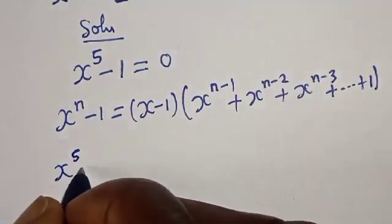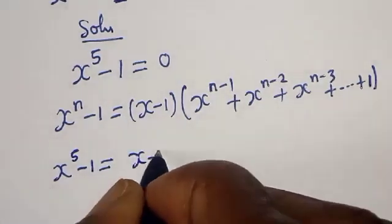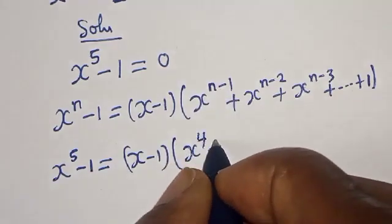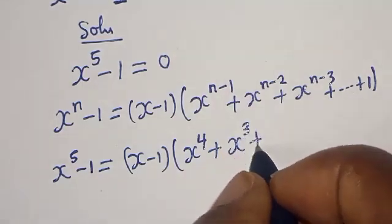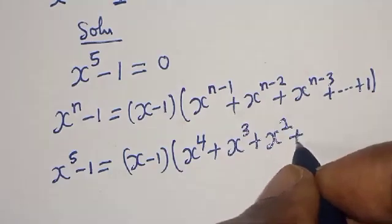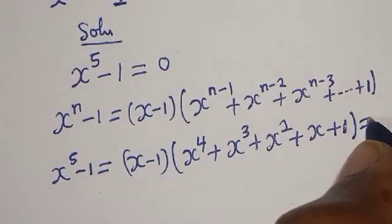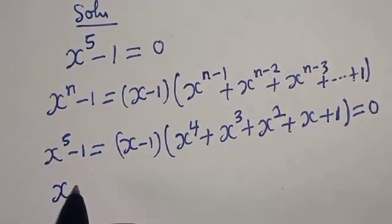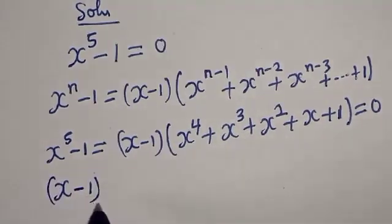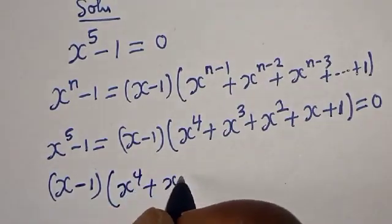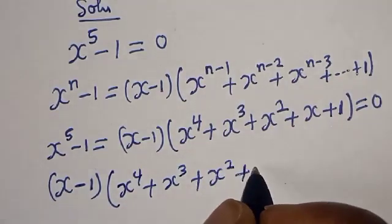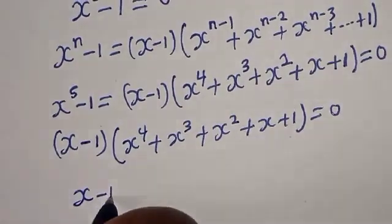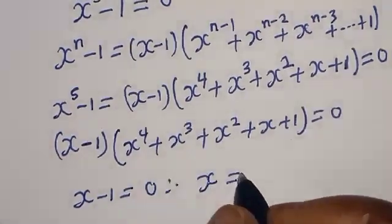So x raised to power 5 minus 1 is equal to x minus 1 times the bracket: x raised to power 4 plus x raised to power 3 plus x squared plus x plus 1, and this equals 0. Now there are two cases. Case one: x minus 1 is equal to 0, therefore x is equal to 1.